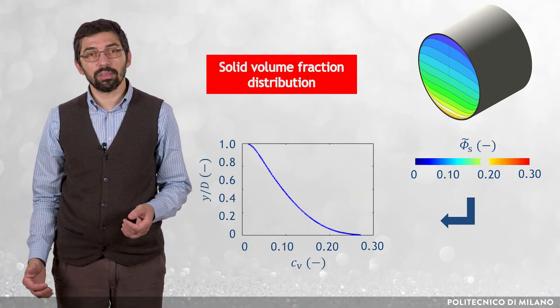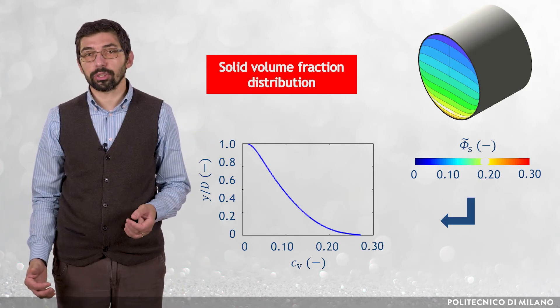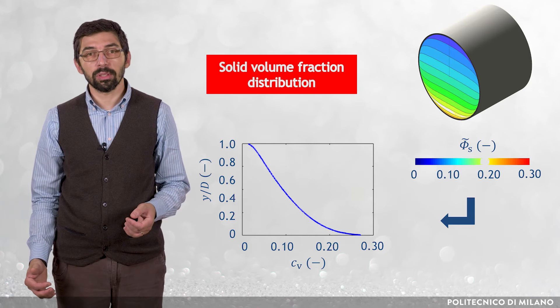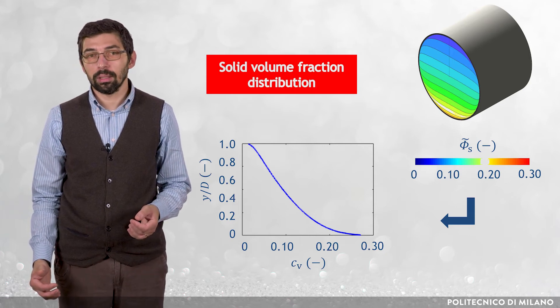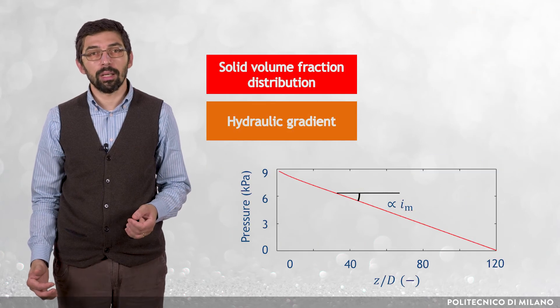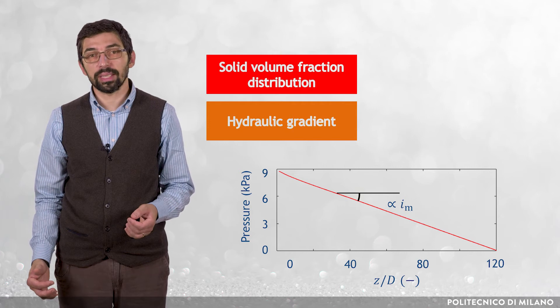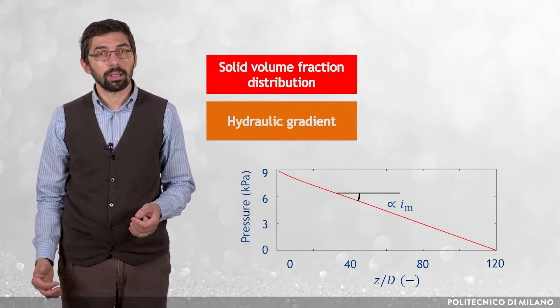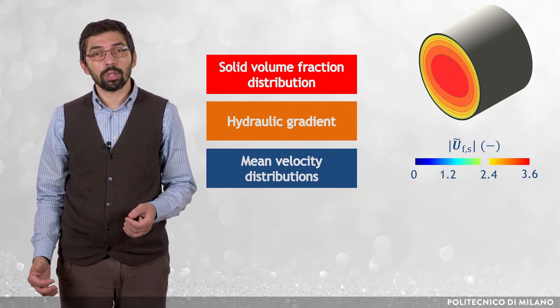Eulerian-Eulerian models can provide useful information about slurry flow in pipes. For instance, from the distribution of the solid-volume fraction over the pipe cross-section, it is possible to extract the vertical solid-volume fraction profile. From the pressure profile along the pipe axis, it is possible to estimate the hydraulic gradient I_M. Finally, the velocity distribution of the two phases can also be easily obtained.